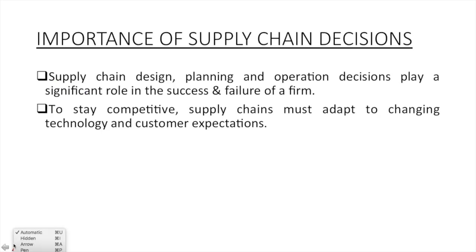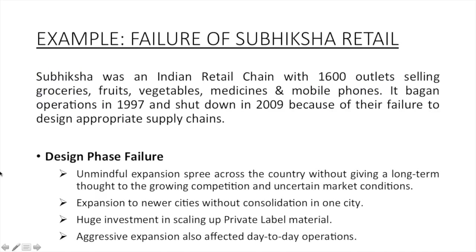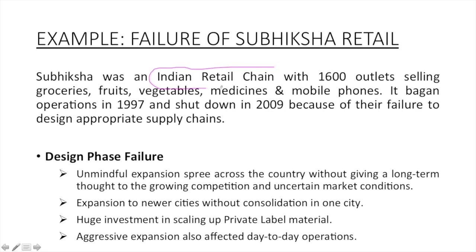Now, why are these decisions important? Because on these decisions depend the success and failure of a firm. Also, to stay competitive in this technologically changing environment and to match customers' changing expectations, one needs to amend the supply chain from time to time. Let's understand this from an example — we'll be talking about Subhiksha Retail. Subhiksha Retail was a competitor to Reliance Fresh stores, but it failed due to its mismanagement of supply chain. Subhiksha Retail started operations in 1997 and shut down in 2009. Within this 10 to 12 years, they expanded enormously by opening up 1,600 outlets all over India.